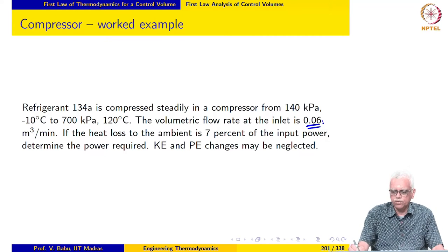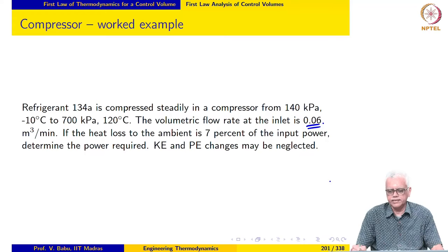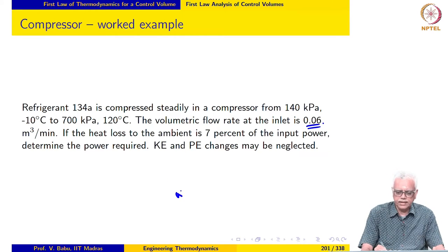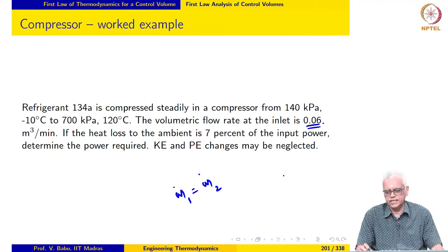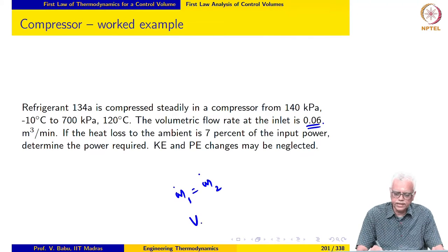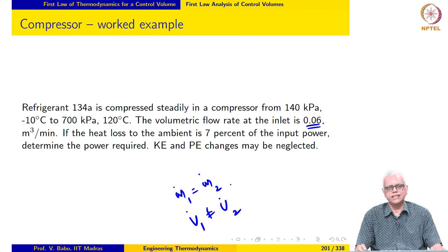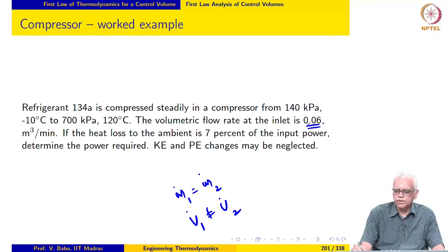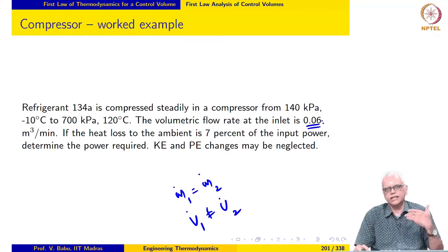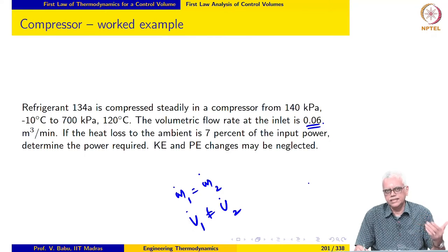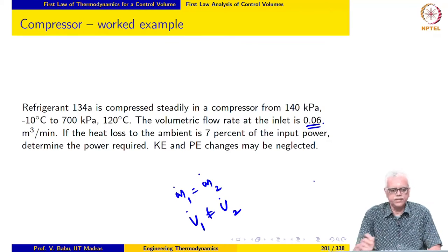When volumetric flow rate is given, you must bear in mind that the mass flow rate at inlet and exit are the same because it is operating at steady state. But the volumetric flow rate at inlet and exit will not be the same because the thermodynamic state is different — densities are different, so volumetric flow rate will be different. The volumetric flow rate at the inlet is given, so we calculate the mass flow rate at inlet as density times volumetric flow rate at inlet, just as in the previous problem.